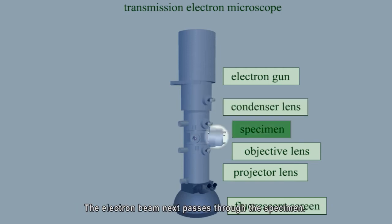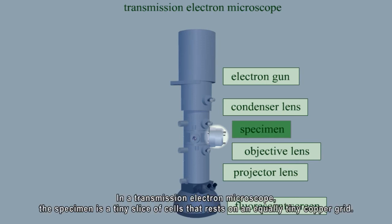The electron beam next passes through the specimen. In a transmission electron microscope, the specimen is a tiny slice of cells that rests on an equally tiny copper grid.